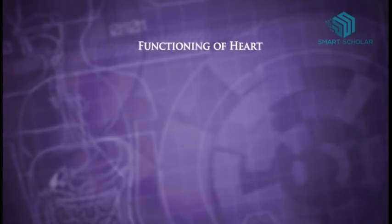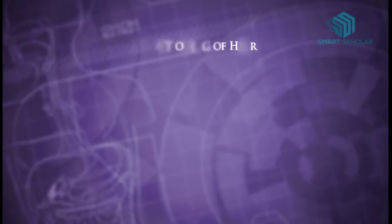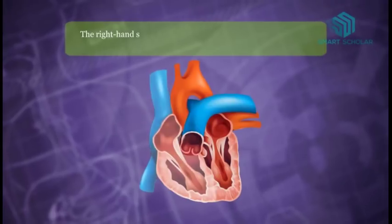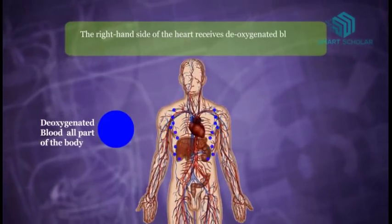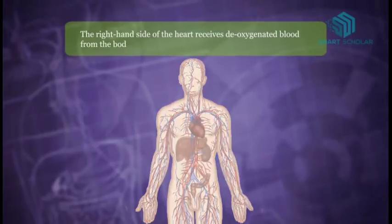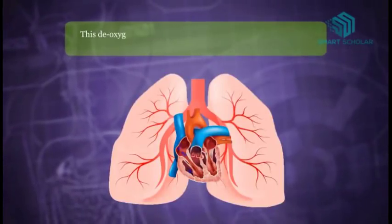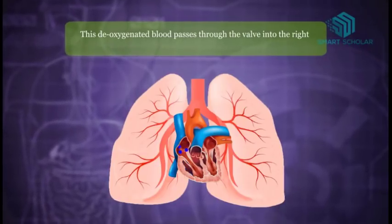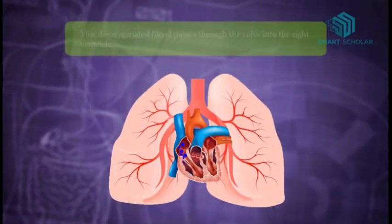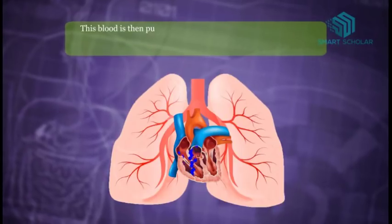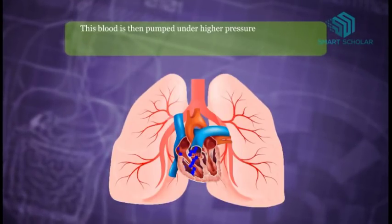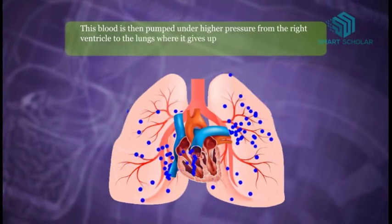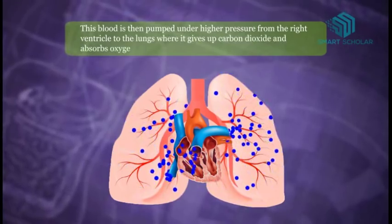Let's get to know the function of the heart. The right hand side of the heart receives deoxygenated blood from the body. This deoxygenated blood passes through the valve into the right ventricle, and is then pumped under higher pressure from the right ventricle to the lungs, where it gives up carbon dioxide and absorbs oxygen.